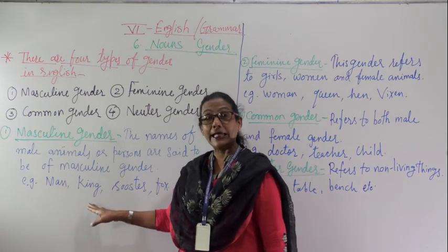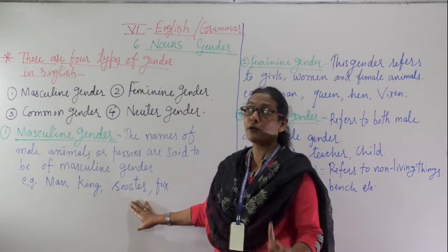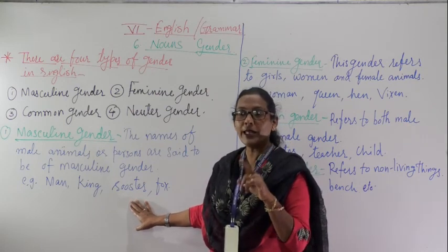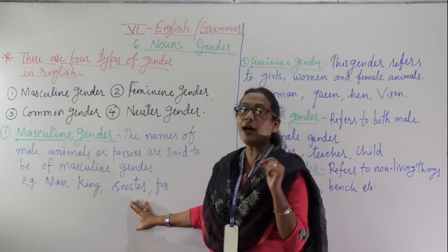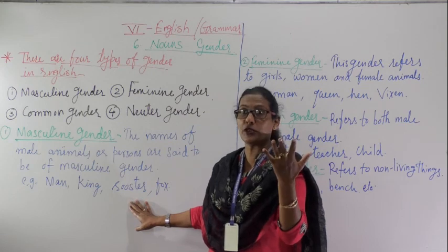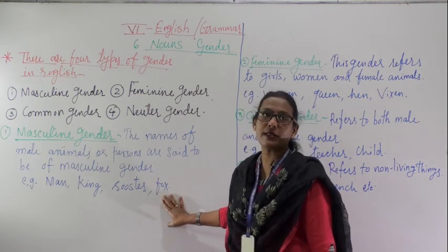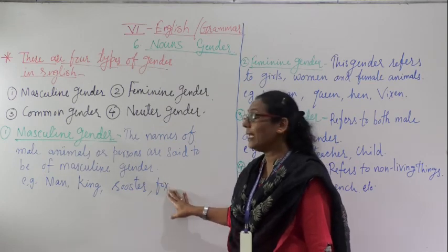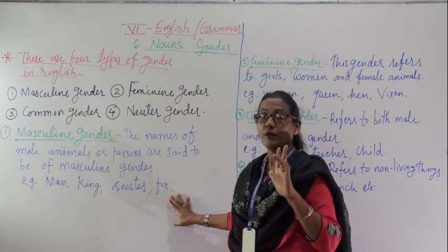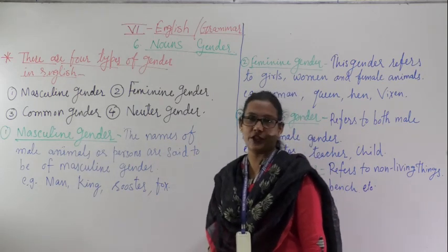Examples of Masculine Gender: Man, King, Rooster. Rooster means the opposite of hen — it is the male chicken. Fox is also a masculine example. So in the masculine gender, once again, in persons or animals, whichever is male, we refer to that as Masculine Gender.